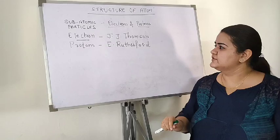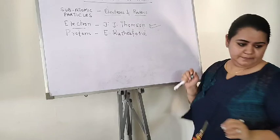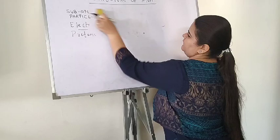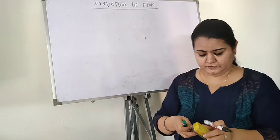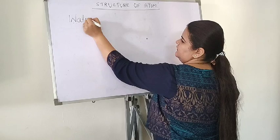Let us start with the first model of the structure of atom given by J.J. Thomson. Thomson said: consider your atom either as a watermelon or as a Christmas pudding.